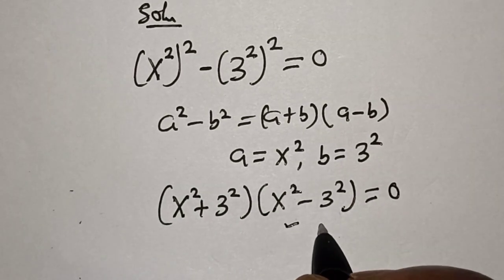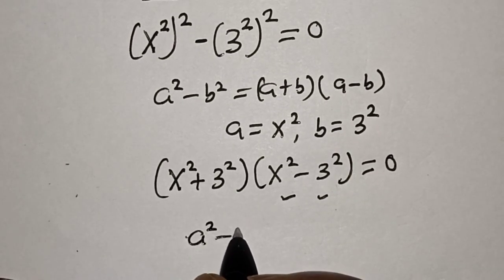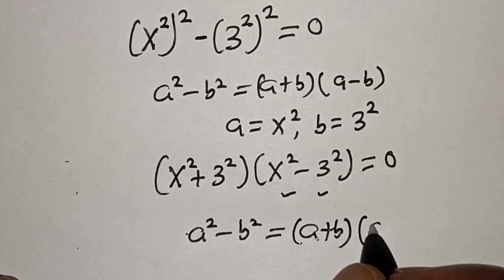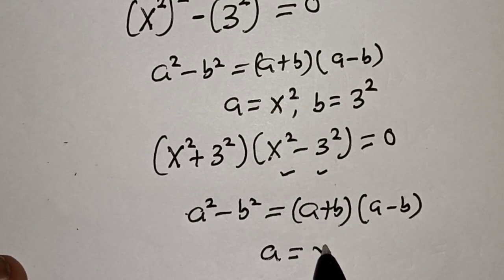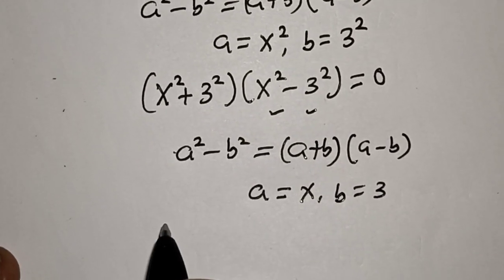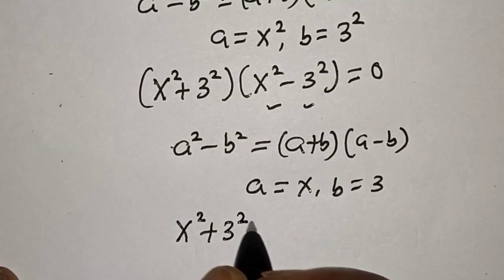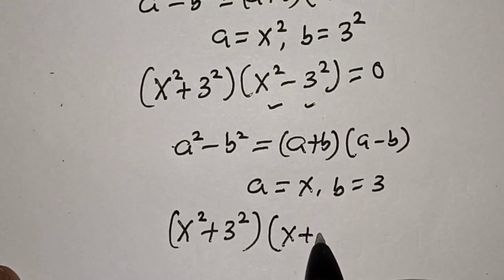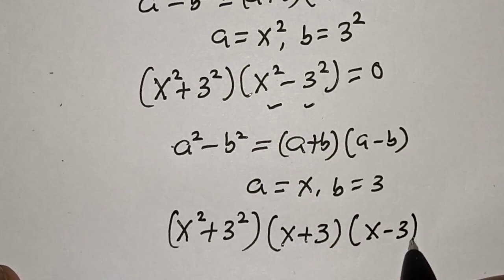Now if you look at this, the second factor is a difference of two squares again. That is a squared minus b squared is equal to a plus b multiplied by a minus b. Then in this case, a is equal to x and b is equal to 3. Let's substitute again. We have x squared plus 9, multiplied by x plus 3, multiplied by x minus 3, is equal to 0.